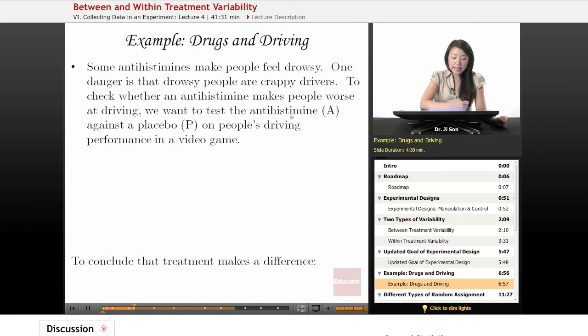Let's look at an example of how these variabilities might impact each other. Here's an example of drugs and driving. Some antihistamines, like allergy medicines, make people feel drowsy, like Benadryl. One danger is that drowsy people are crappy drivers. To check whether an antihistamine makes people worse at driving, we want to test an antihistamine against a placebo on people's driving performance in a video game.